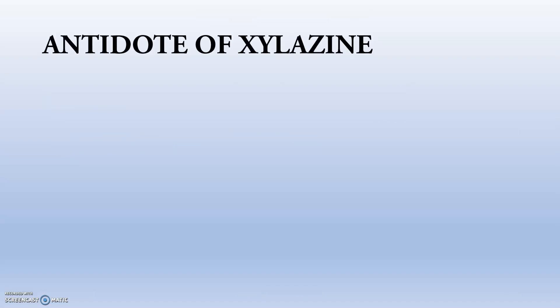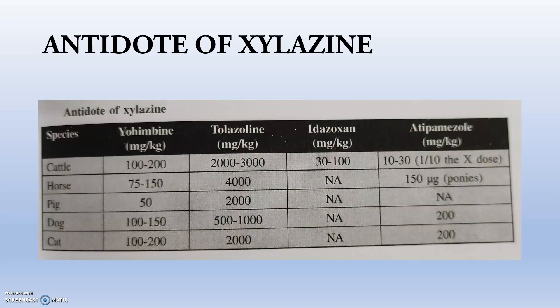Whenever a very high dose of Xylacine is administered or Xylacine poisoning occurs, an antidote is needed. The antidotes of Xylacine are Yohimbine, Tolazoline, Atipamezole, and Phentolamine. These are dosed specifically for cattle, pig, dog, horse, and cat. Yohimbine and Tolazoline are alpha-2 adrenergic antagonists — the opposite of Xylacine and Medetomidine, which are alpha-2 adrenergic agonists, so the antidotes have entirely opposite action.